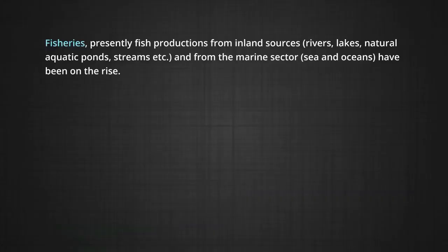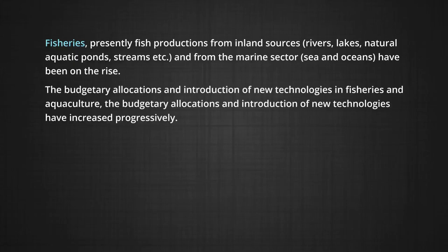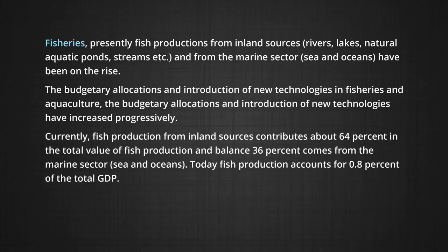In the case of fisheries, fish production from inland sources such as rivers, lakes, natural aquatic ponds, and streams, as well as from the marine sector — the sea and ocean — has been on the rise. Budgetary allocations and introduction of new technologies in fisheries and aquaculture have increased progressively. Currently, fish production from inland sources contributes about 64% of the total value of fish production, while the balance 36% comes from the marine sector.